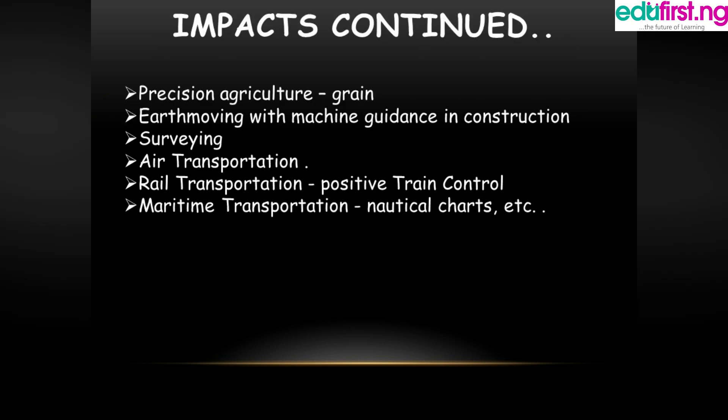It doesn't just stop there. Precision agriculture includes processing grains and other agricultural products. Machine guidance in construction — such as cars, tractors, bikes, and surveying machines — means you no longer need a tape measure. Air transportation, our airplanes, railway transportation, control systems, maritime transportation, and multi-car charts are all products of physics.